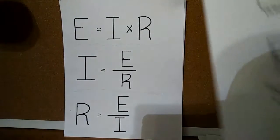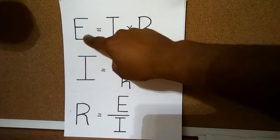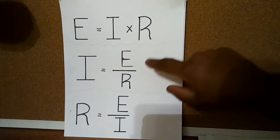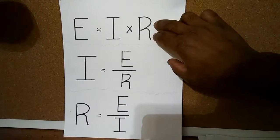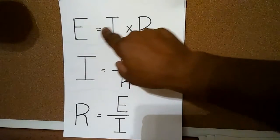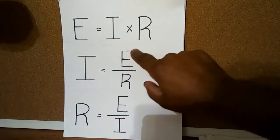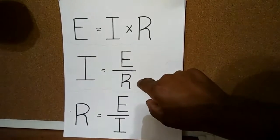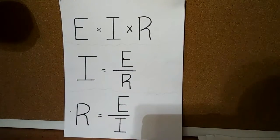Let's take a look at the first formula: E equals I times R. Now the other two formulas derive from this formula — I equals E over R, and R equals E over I.